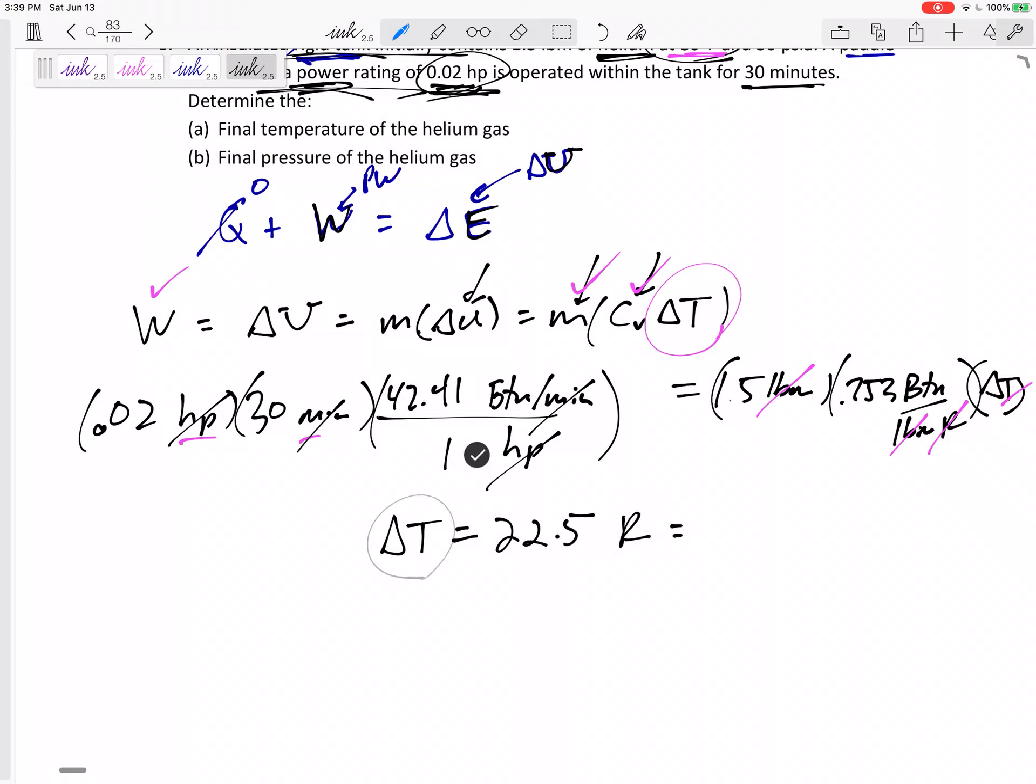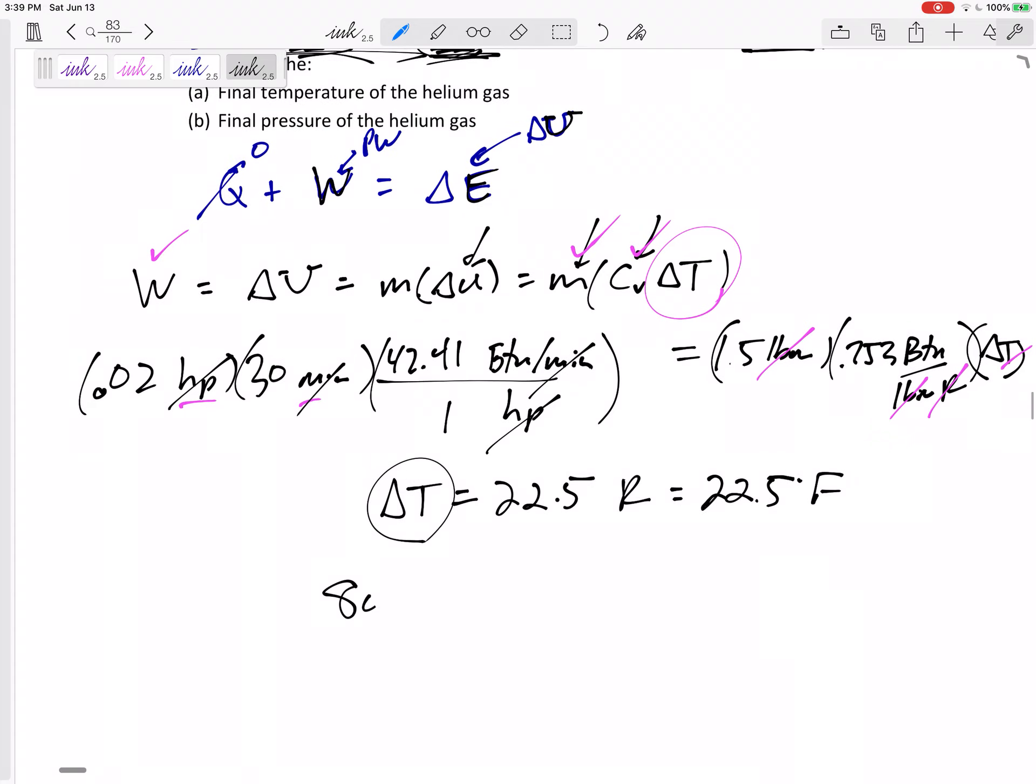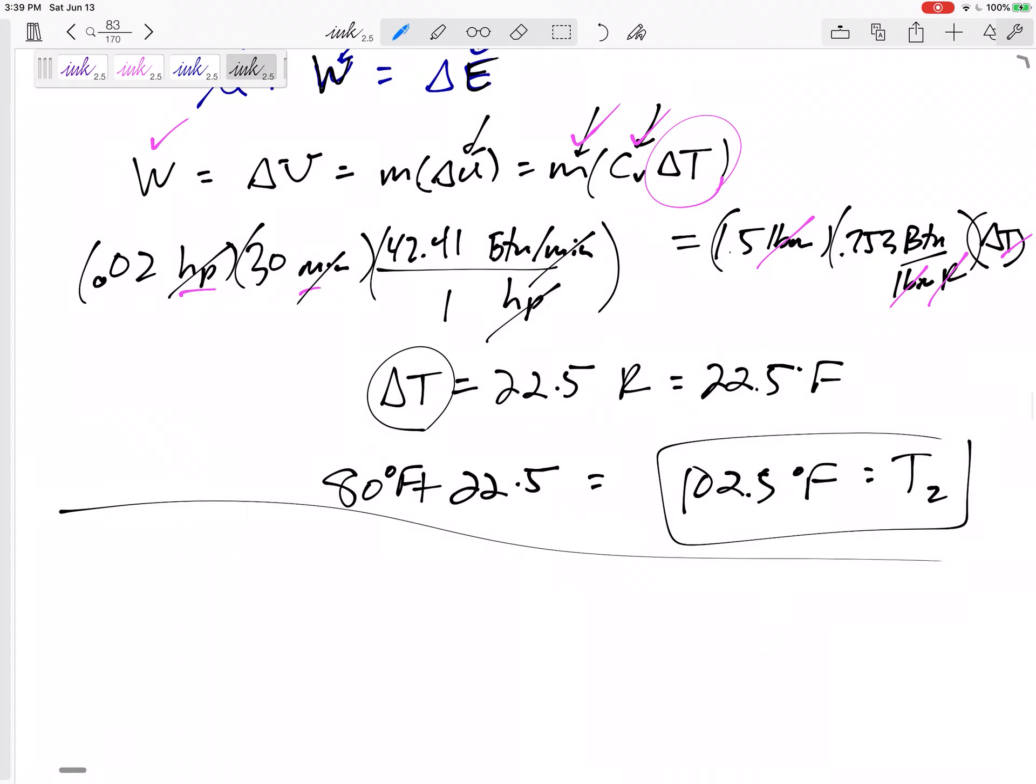But when we're talking about changes in temperature, this is also a rise, right? Rankin and Fahrenheit rise and fall at the same levels. They're all separated by the same degrees. So there's no need to convert that. Just take 80 plus 22.5. 102.5 degrees Fahrenheit is my final temperature. That's my final temperature.